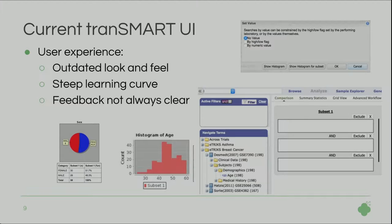What I mean is: if you try to make a cohort, you drag in all your concepts of interest, then you hit summary statistics and then you see that you have an empty cohort — we're trying to fix this. Another example is an error when you're trying to run an advanced workflow. We want to get a more interactive, intuitive UI.